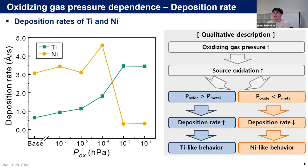This kind of pressure dependency can be explained by the difference in vapor pressure of the metallic source and oxidized source. As oxidizing gas pressure increases, the source becomes more oxidized. If the oxidized source has higher vapor pressure than the metal, then deposition rate will increase like titanium did. In contrast, if the metal vapor pressure is higher than vapor pressure of its oxide, the deposition rate can be decreased like nickel showed.